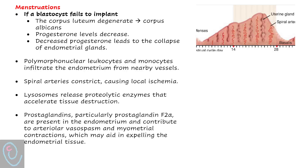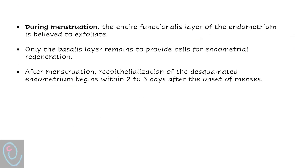However, if a blastocyst fails to implant, the corpus luteum degenerates and forms the corpus albicans. Progesterone levels decrease, resulting in collapse of the endometrial glands. Polymorphonuclear leukocytes and monocytes infiltrate the endometrium. Spiral arteries constrict causing local ischemia. Lysosomes release proteolytic enzymes that accelerate tissue destruction. Prostaglandins — especially prostaglandin F2 alpha — cause arteriolar spasm and myometrial contraction, resulting in menstruation. During menstruation, the entire functionalis layer exfoliates, only the basalis layer remains, and re-epithelialization of the denuded endometrium begins within 2–3 days.